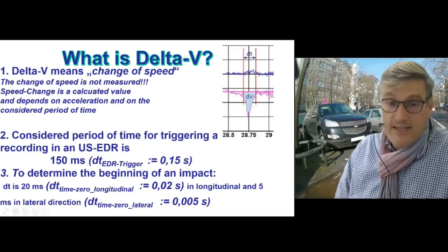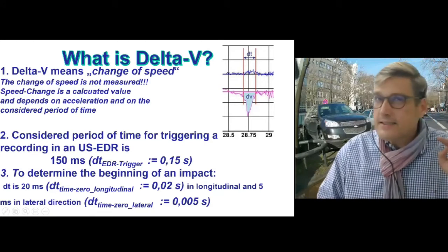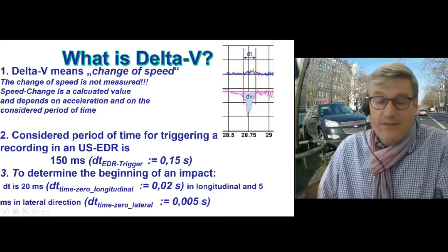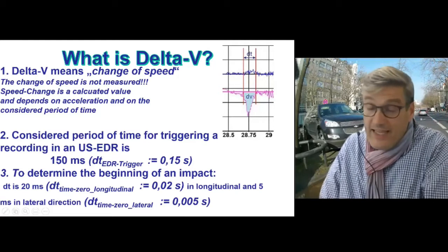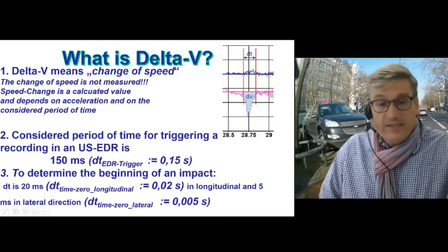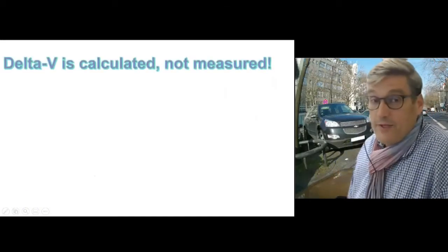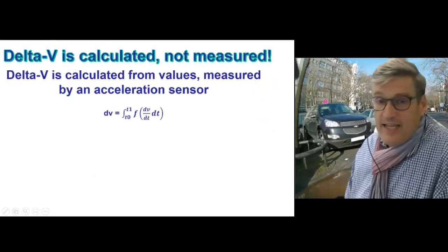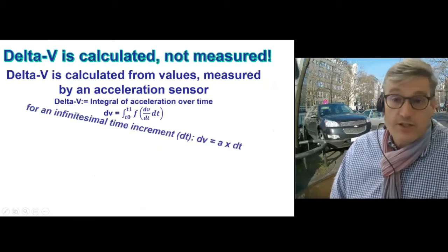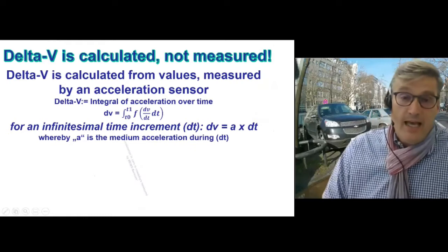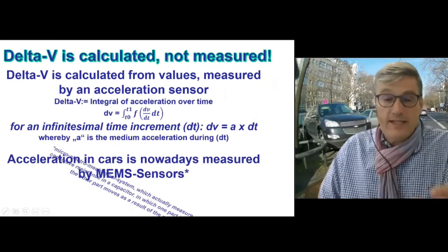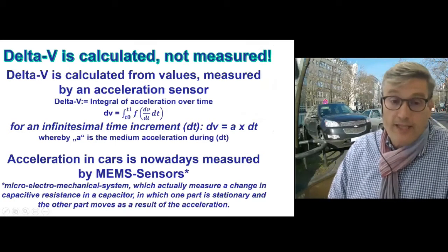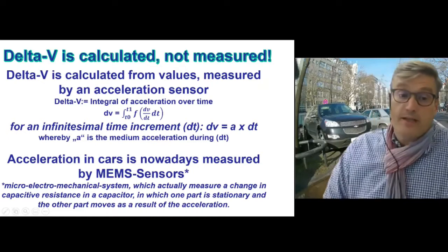If the deceleration stays at this level, the recording will start. The system works by integrating acceleration over time in 20-millisecond periods. All cars have a so-called acceleration sensor — a microelectronic mechanical system (MEMS). The sensor structure works such that when the car decelerates, one part moves relative to the stable part, and the faster the car slows down, the more it moves. This allows us to measure the change of speed over time via the acceleration sensor.